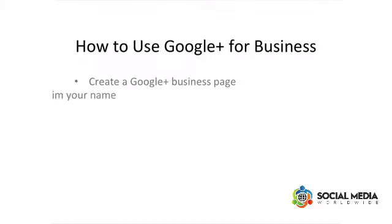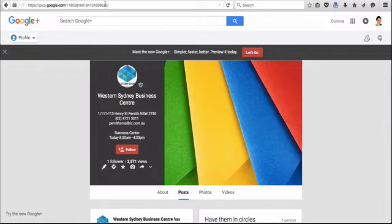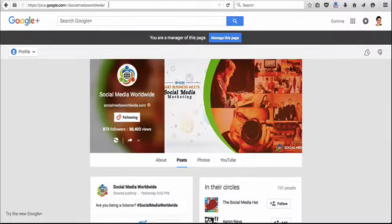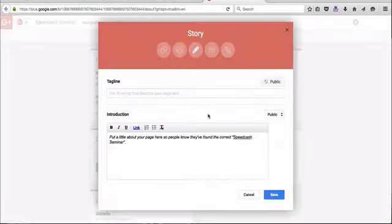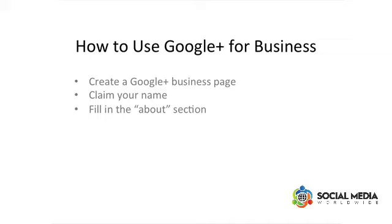When you create a Google business page, remember to claim your name, so instead of having a long URL full of numbers, you have a customized URL for your page. Make sure you also fill in the information requested in the About section, such as your tagline, your introduction, and contact information.